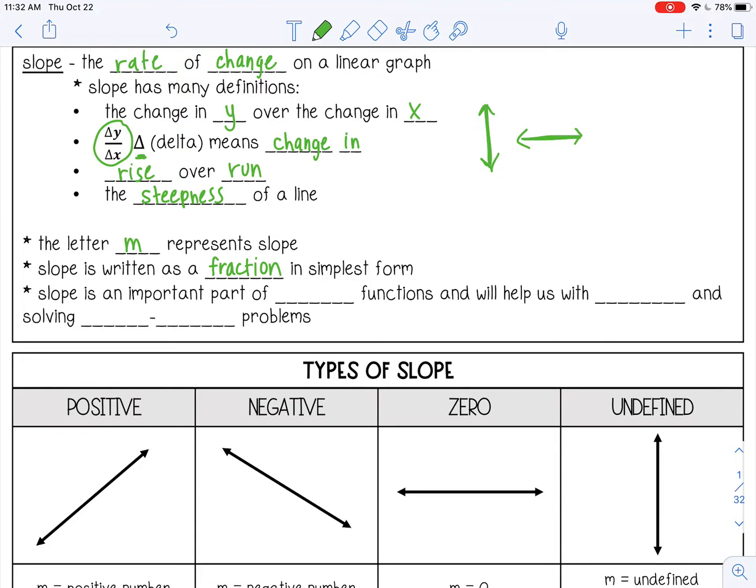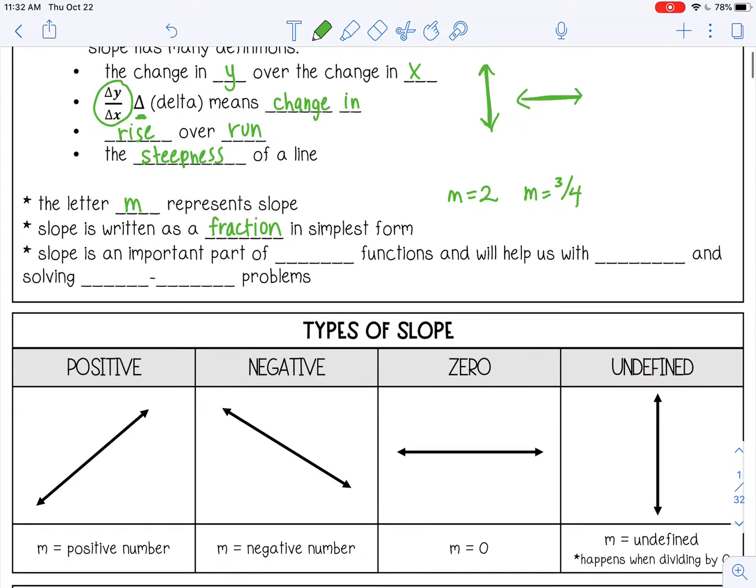And slope is written as a fraction in simplest form. Now it can also be a whole number. So if I have a slope of 2, that's fine, or I can have a slope of 3 fourths. But you just want to make sure you always simplify your fractions. And slope is an important part of linear functions or lines, and it will help us when we are graphing and solving real-world problems.